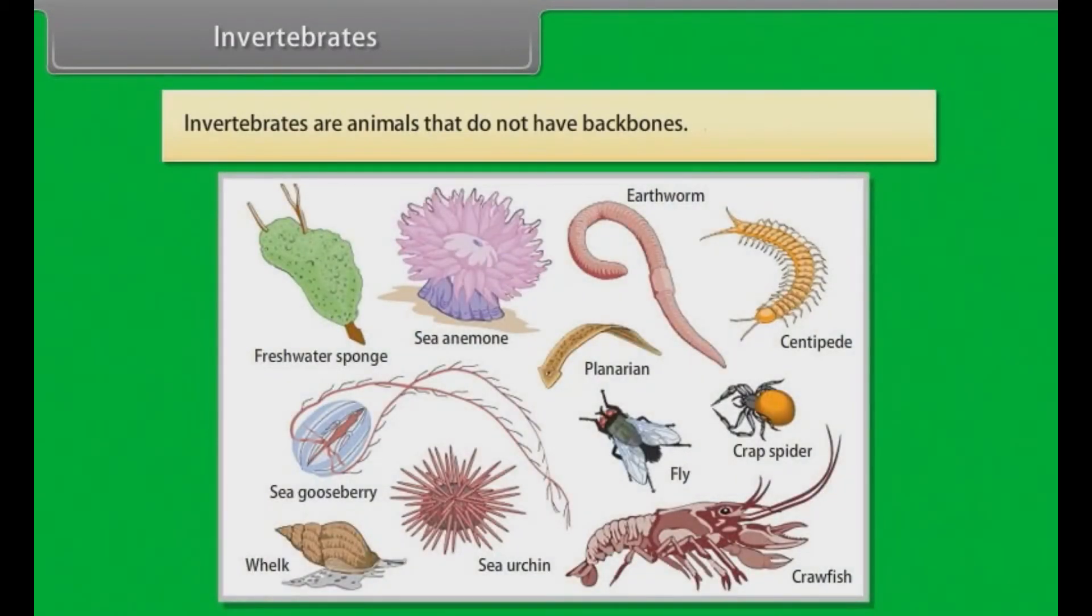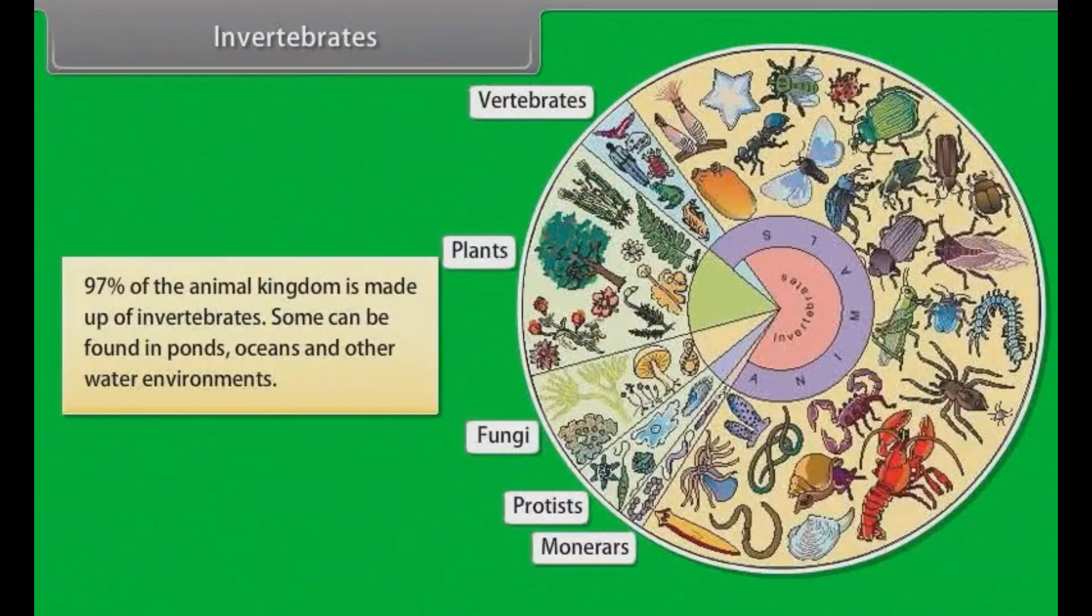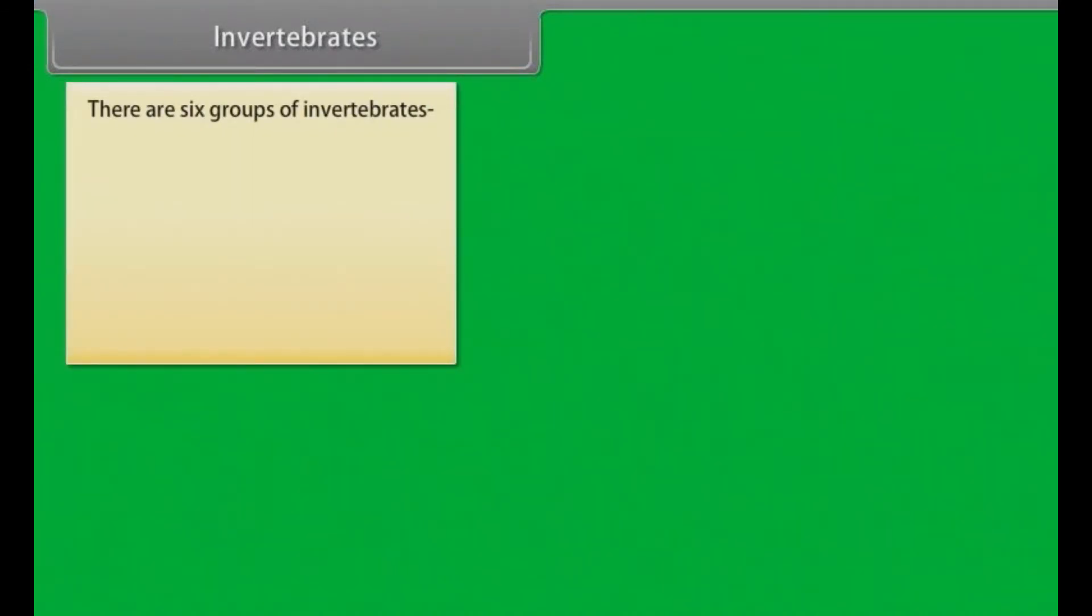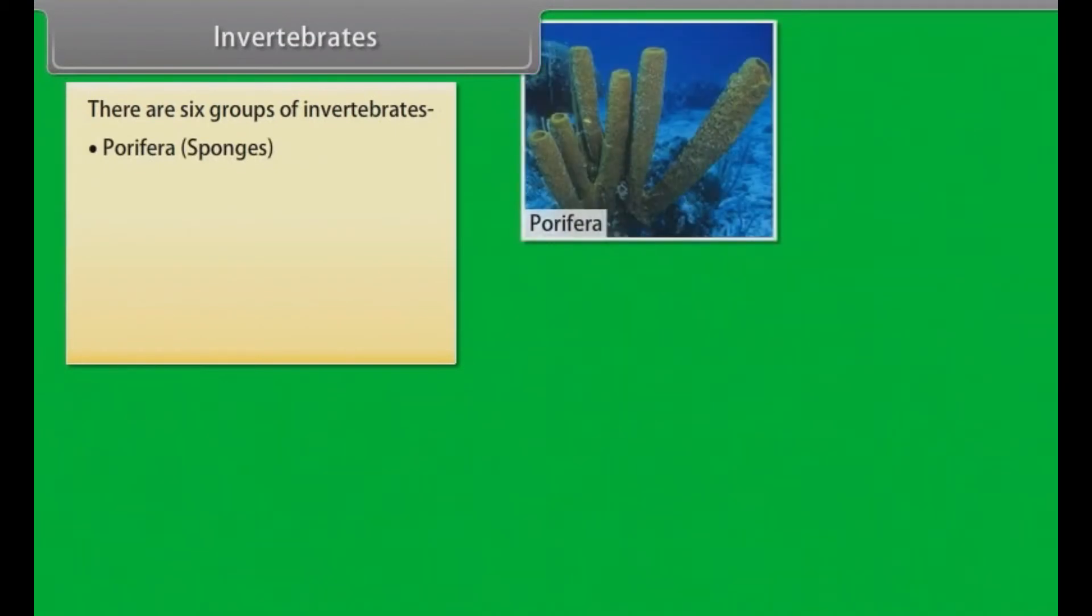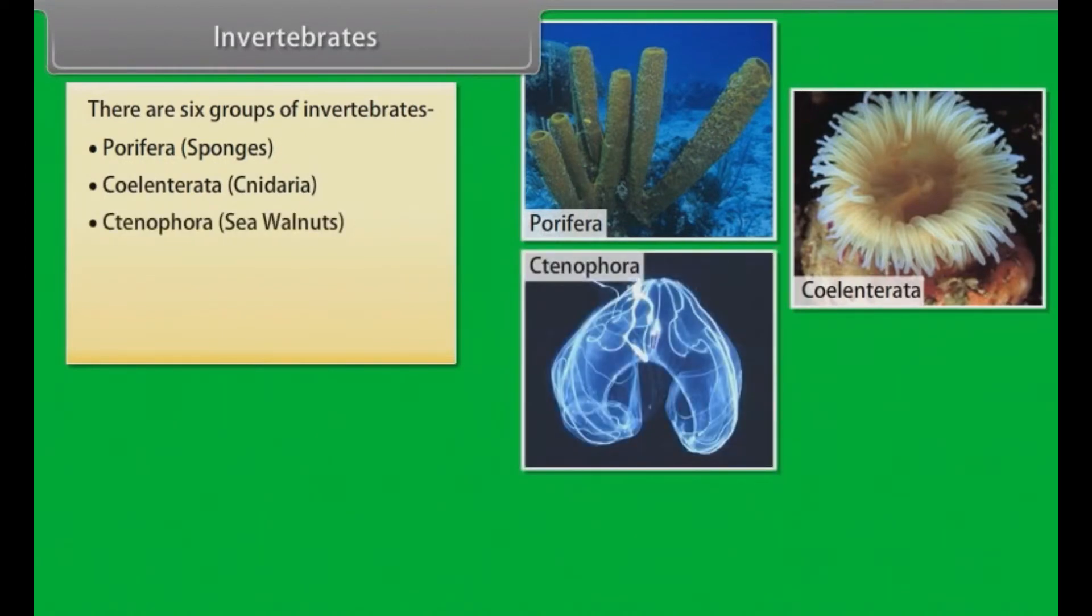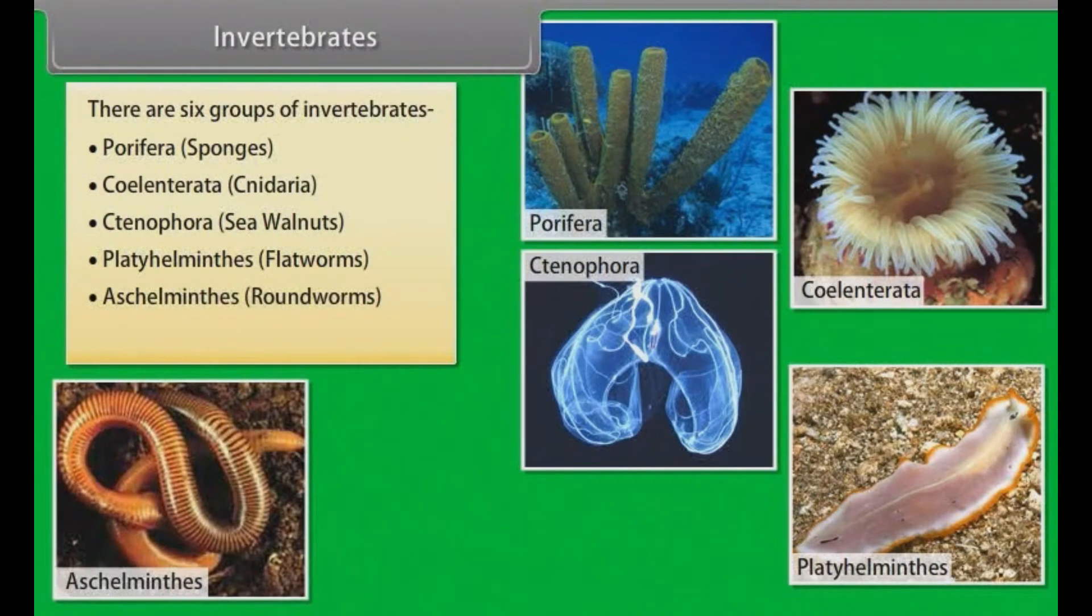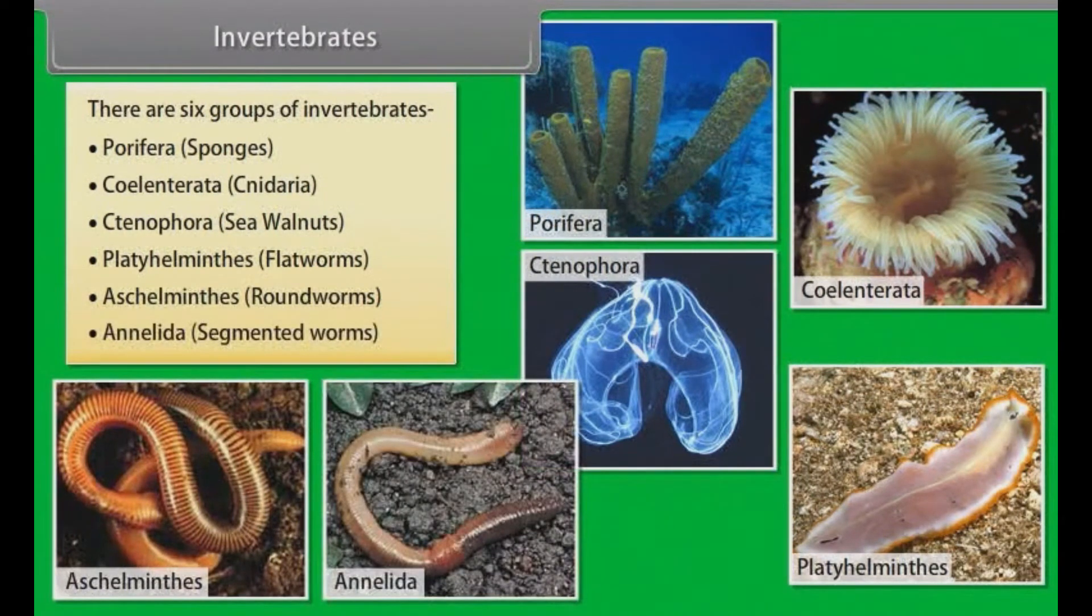Invertebrates. As we have already said, invertebrates are animals that do not have backbones. An exoskeleton is a hard outer covering that protects an animal's body and gives its support. Insects and some other invertebrates have exoskeletons. Ninety-seven percent of the animal kingdom is made up of invertebrates. Some can be found in ponds, oceans and other water environments. There are six groups of invertebrates. They are Porifera (example: sponges), Coelenterata (example: cnideria), Ctenophora (sea walnuts), Platyhelminthes (example: flatworms), Aschelminthes (example: roundworms), Annelida (example: segmented worms).